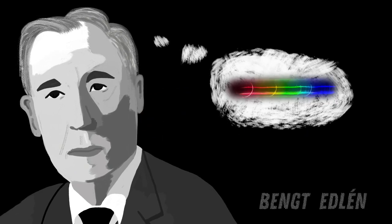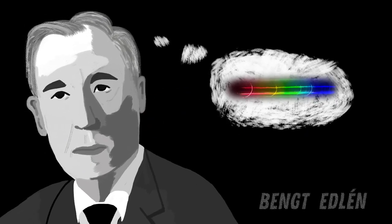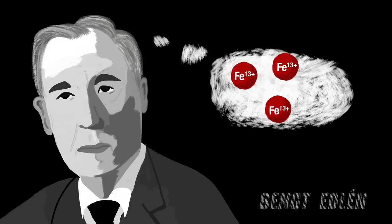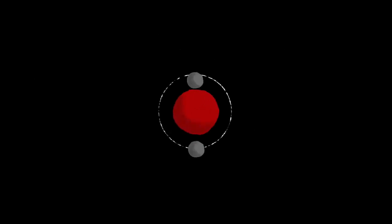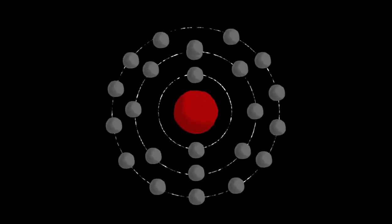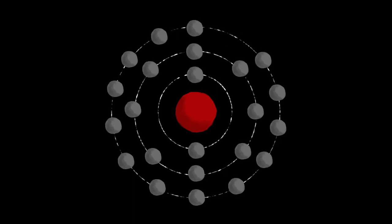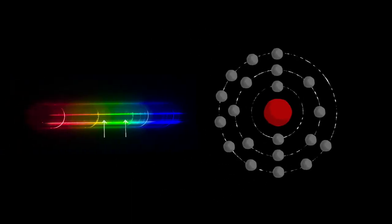It wasn't until 70 years later that a Swedish scientist discovered that these lines were the result of elements such as iron being stripped of its electrons. Every element has a specific number of electrons surrounding the nucleus. As each electron is removed, more energy is needed to remove the next one.